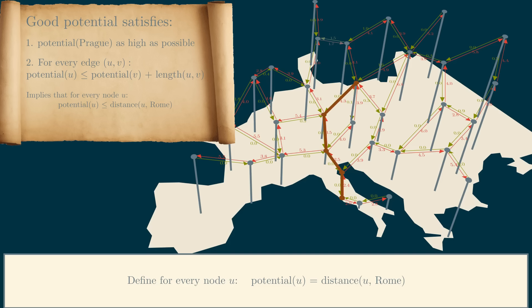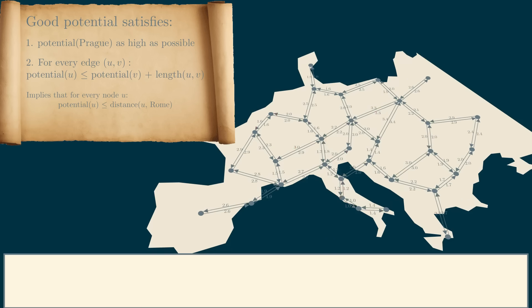Well, the problem is how to compute them. Remember, we want to speed up Dijkstra's algorithm, so we have to be able to compute these potentials fast. But we chose the potential of Prague to be the distance from Prague to Rome, which is what we are trying to compute in the first place. So, we have to go back to our list of requirements for a good potential and add a third property. The potential should be something we can compute fast. Now, we finally have a complete list of requirements.